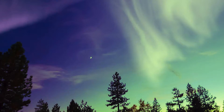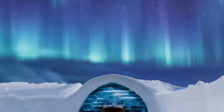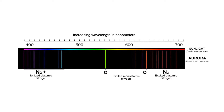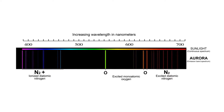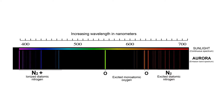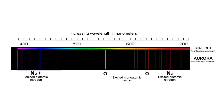The most common colors seen are green and blue, but the auroras can also show pink and orange hues depending on the altitude and the interactions of photons, which are particles of light.